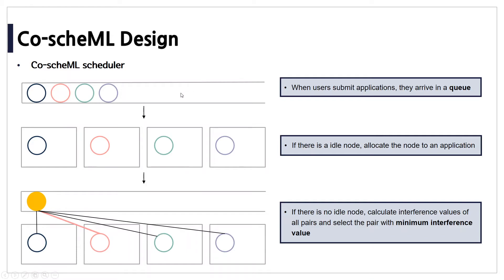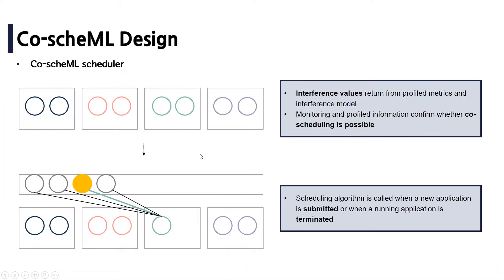Our CoScheduleML scheduler operates as follows. When users submit applications, they arrive in a queue. CoScheduleML intends not to waste resources from an idle GPU. When no task is in the waiting queue, it executes an application exclusively — so if there are four nodes and four tasks, the scheduler allocates each task to a node. When an application is waiting in the queue, it is executed as a pair to maximize GPU resource utilization. For interference avoidance, the scheduler chooses the pair with the minimum interference value. It compares interference values of all pairs between the waiting task and running tasks across nodes. If the second node's interference value is smallest, the waiting task pairs with the task on that node, requesting values from both the profiling repository and the constructed interference model.